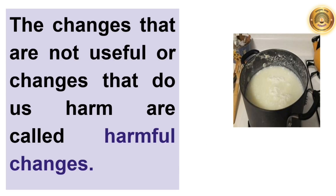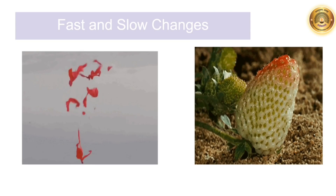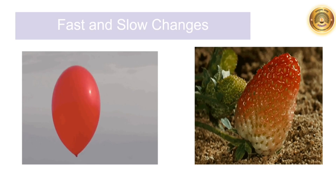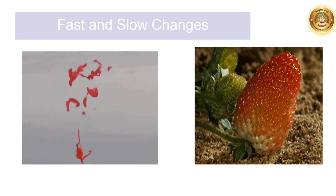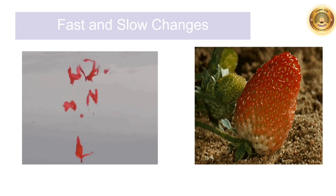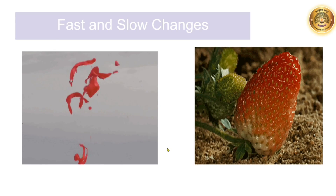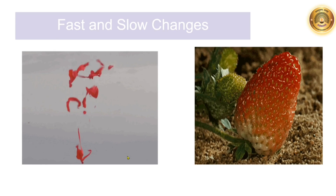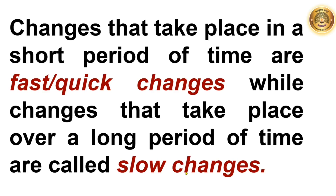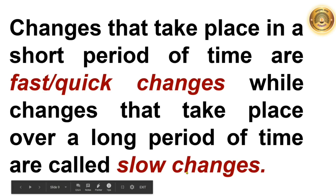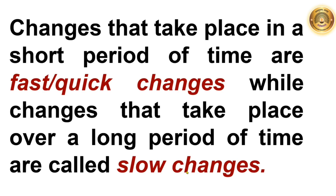For example, the ripening of a fruit is a useful change that occurs naturally. Now, let us consider two changes: the bursting of a balloon and the ripening of a fruit. From the point of view of their duration, that is the time taken to happen, we can classify them as quick or fast change and slow change. The bursting of the balloon is a quick or fast change — it happens quickly. Whereas, the ripening of a fruit takes a long time. So changes that take place in a short period of time are fast or quick changes, while changes that take place over a long period of time are called slow changes.